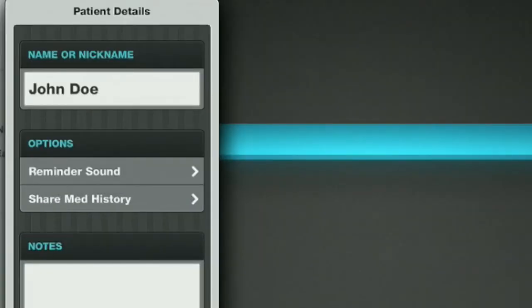And then there's a note section. If you tap on the note section, you can type in something like a penicillin allergy, for example, or any other simple notes about yourself or the person that you are setting this app up for.